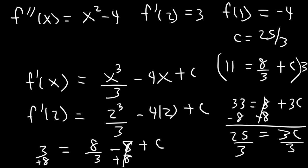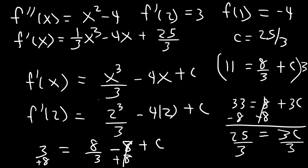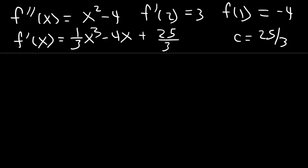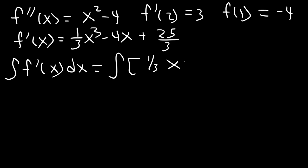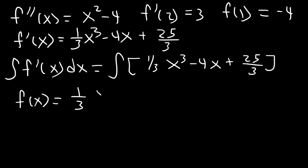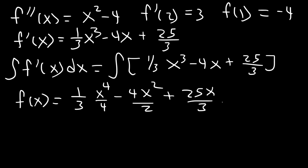So now we can write: f'(x) is equal to one-third x cubed minus 4x plus 25 over 3. Now let's integrate this function. The antiderivative of x cubed is x to the fourth divided by 4, for x it's x squared over 2, and for the constant 25 over 3 it's 25x over 3, plus a new constant d.